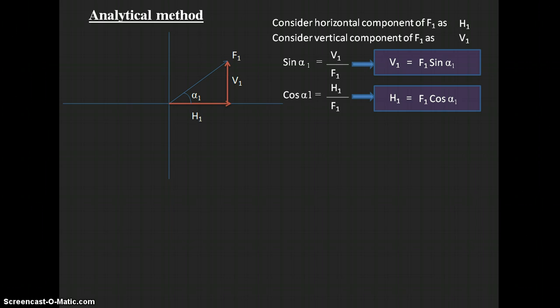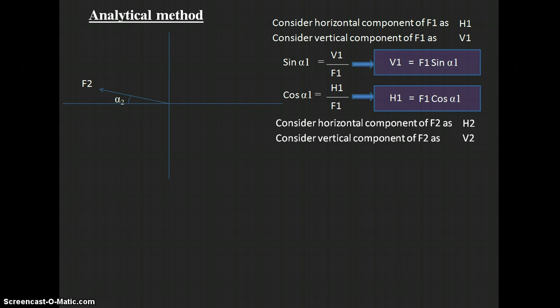Similarly, for all forces we need to find the horizontal and vertical components. For force F2, we assume the horizontal component as H2 and the vertical component as V2. We then construct a right-angle triangle by shifting the vertical component to the left side to find H2 and V2 in terms of F2 and alpha-2.